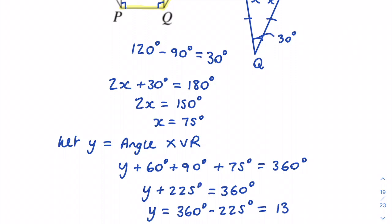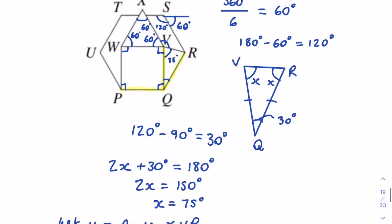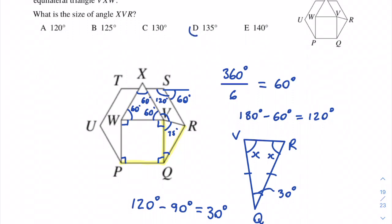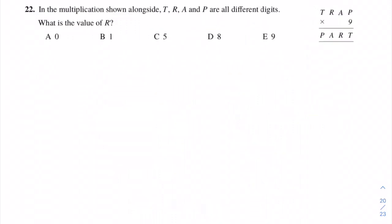Subtracting 225 from both sides gives y equals 135 degrees — that is answer D. Question 22: in the multiplication shown, T, R, A, and P are all different digits. What is the value of R? The four-digit number TRAP multiplied by 9 gives another four-digit number with the same digits rearranged, meaning TRAP × 9 must be less than 10,000.